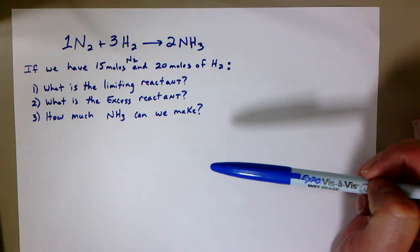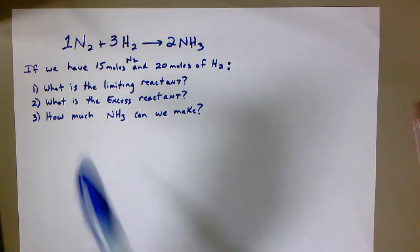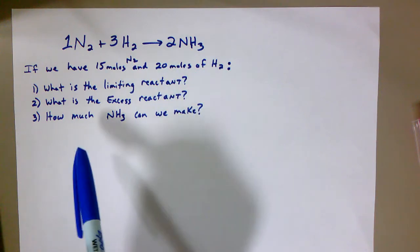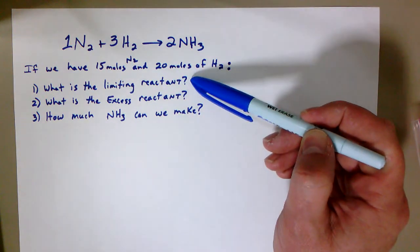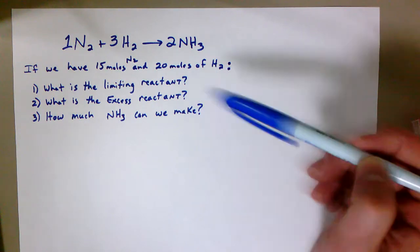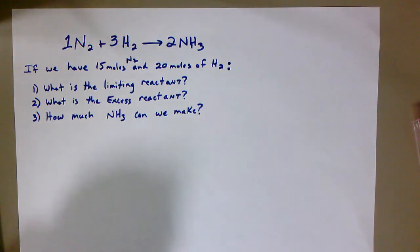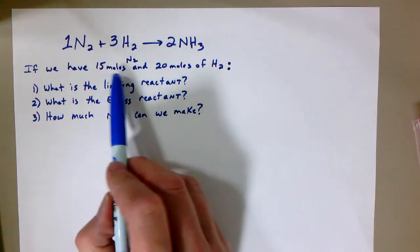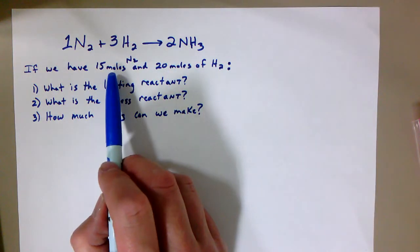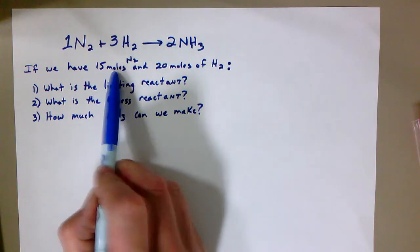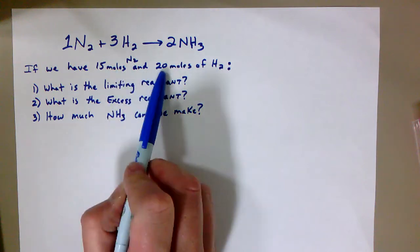But in this case, I've given that to you. So we have a situation here where we have 15 moles of N2 and 20 moles of H2. And I'd like to know what is our limiting reactant, what is our excess reactant, and how much NH3 can we make? So in essence, it's like saying you go back to your shelf or go back to your lab station, and I have this much of each ingredient at your lab table.